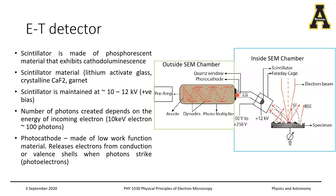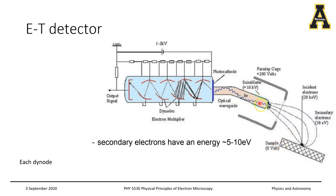To recap the signal path: electrons from the incoming beam generate secondary electrons, which are attracted by the Faraday cage, then accelerated toward the scintillator by the higher voltage. The scintillator generates photons, which travel through a light guide to the photocathode. At the photocathode, the photons are converted back into photoelectrons. The schematic shows secondary electrons flowing in, the photon (h-nu) traveling to the photocathode, generating new photoelectrons that then enter the photomultiplier tube outside the chamber.